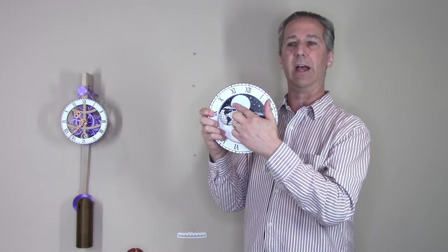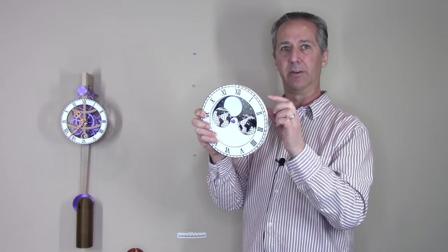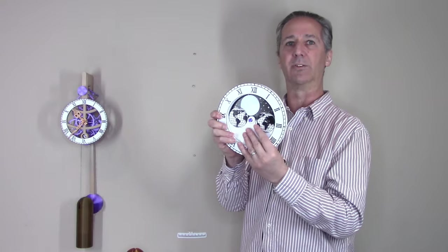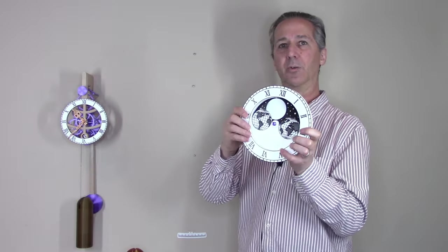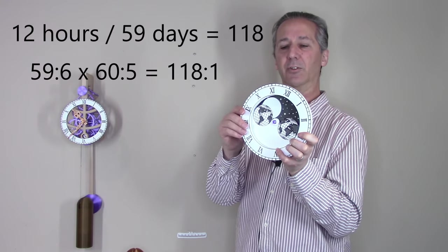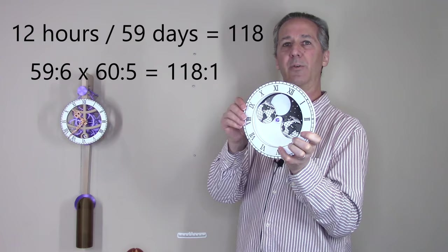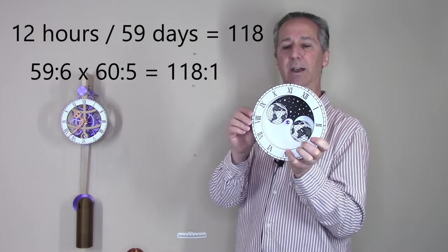This moon phase dial runs off of the hour hand, the hour hand rotating once around every 12 hours. This moon phase dial wants to rotate once every 59 days. So there's a 118 to 1 ratio between the hour hand and the moon phase dial.